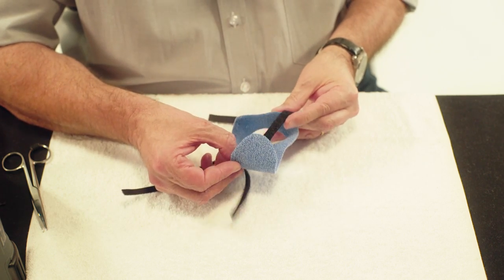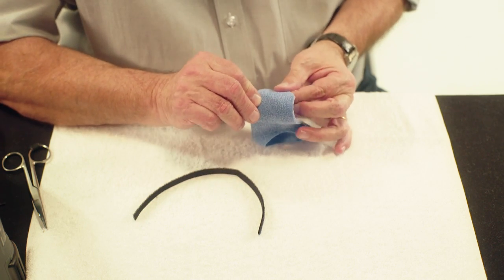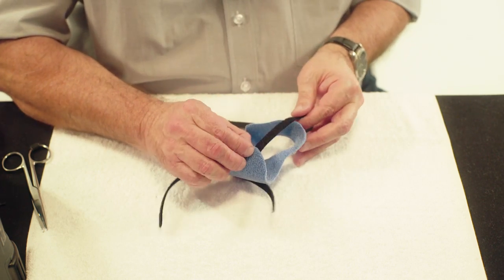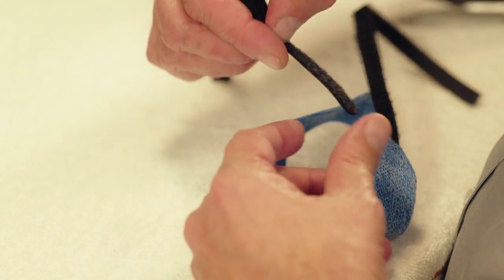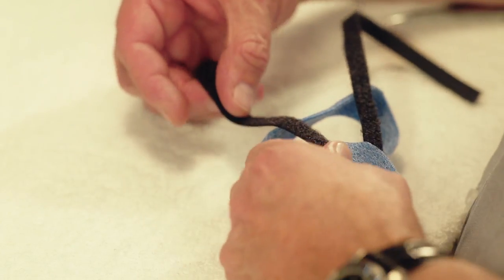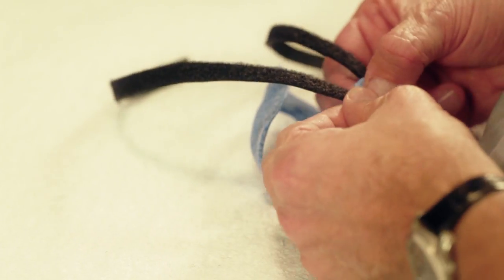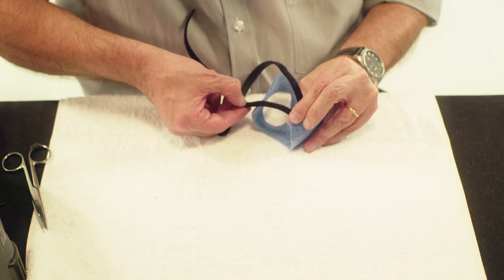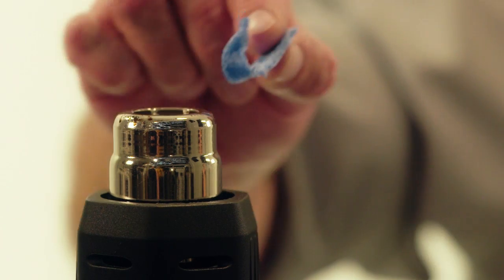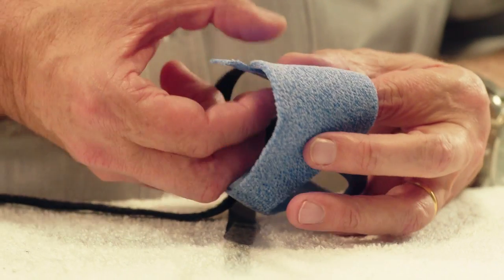Attach the first strip of Velcro loop with an upward inclination towards the thumb. Attach the second strip of Velcro loop with a downward inclination towards the thumb. Heat a small piece of Orficast and stick it over the edges of the Velcro loop to secure its bonding.